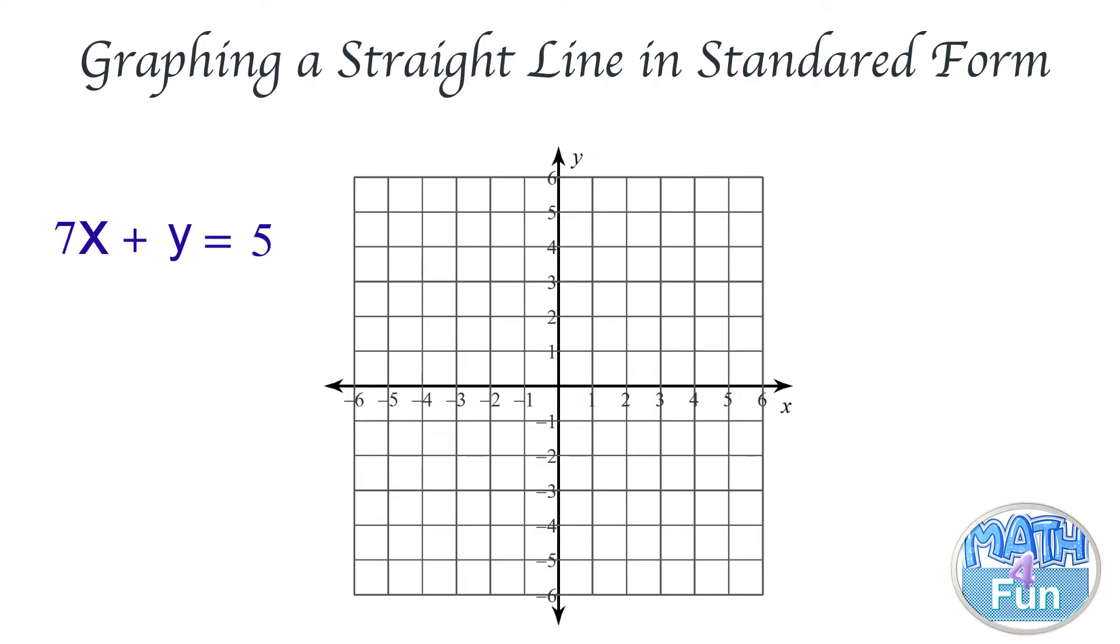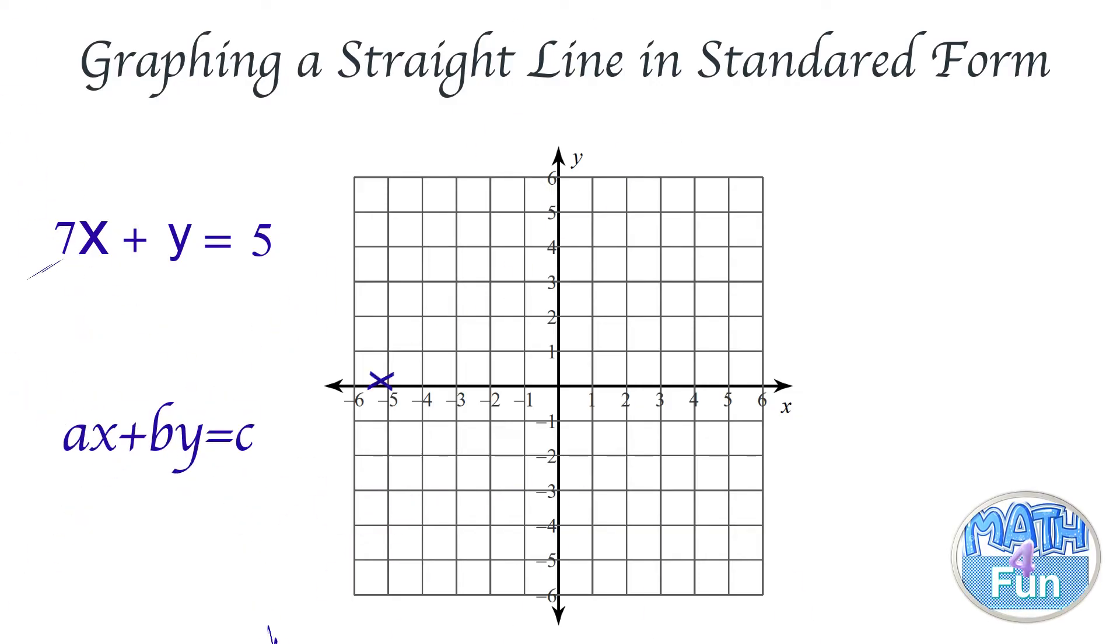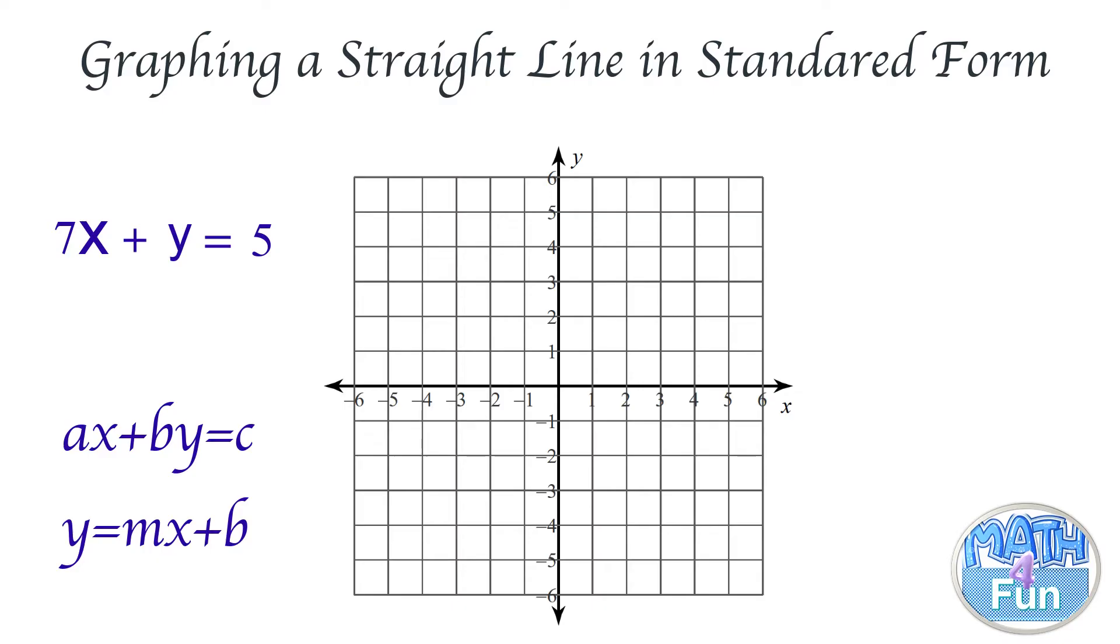Here we have the equation 7x + y = 5. All you need to do is change the equation from standard form to slope-intercept form. How do you do that?